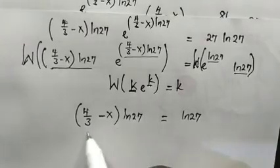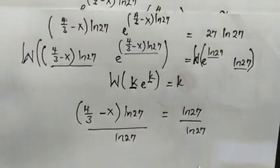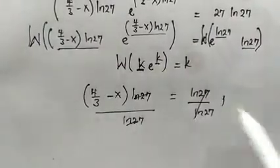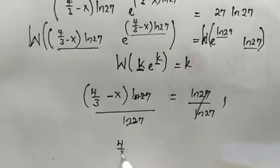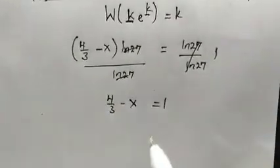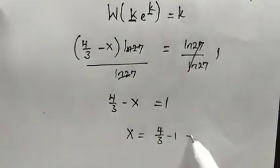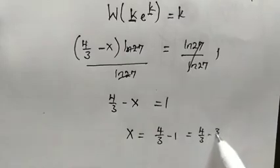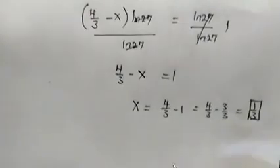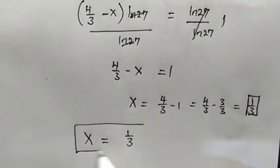So we divide both sides by ln of 27 — this cancels — and we get 4 over 3 minus x is equal to 1. From here, x is equal to 4 over 3 minus 1, which is 4 over 3 minus 3 over 3, which gives us 1 over 3. Therefore we find the solution: x is equal to 1 over 3.